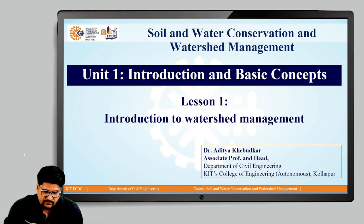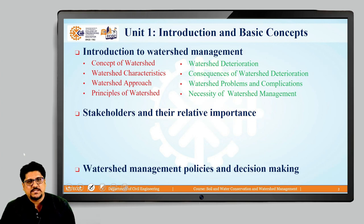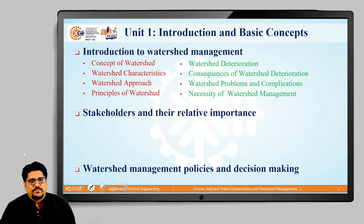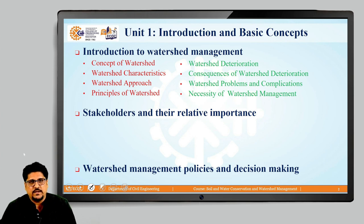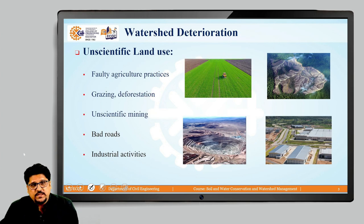In this first lesson, we have already covered some topics like concept of watershed, watershed characteristics, watershed approach, and principles of watershed management. Now, we are going to talk about the remaining topics in this lesson: watershed deterioration, consequences of watershed deterioration, watershed problems and related complications, and the necessity of watershed management. So let us start with watershed deterioration.